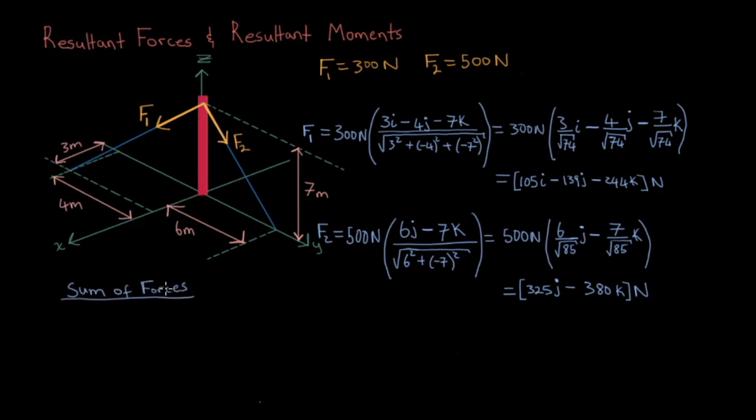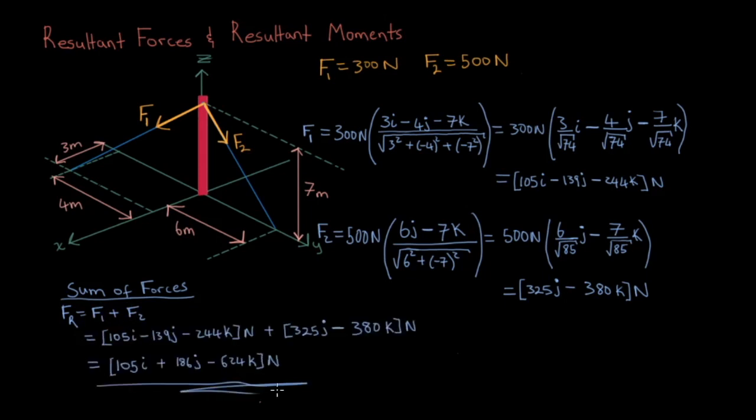So now, to get the resultant force, all we do is we add those two vectors and we get the following vector: 105i plus 186j minus 624k.